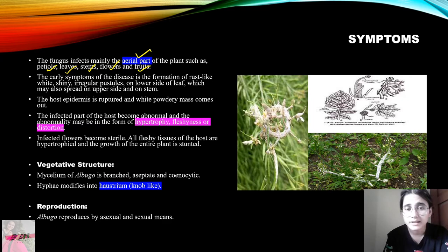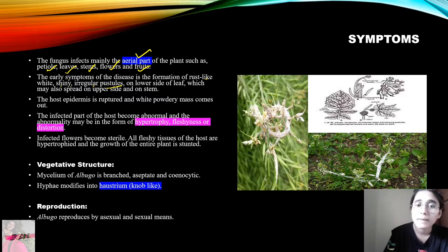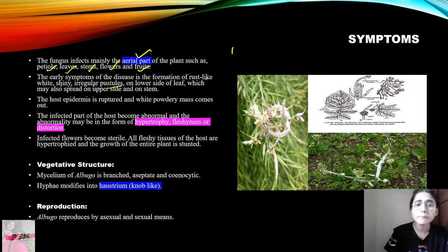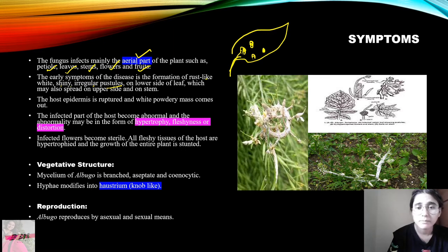The early symptoms of the disease are rust-like, white, shiny, irregular pustules. We see these on the lower surface of the leaf — white pustules which may spread to the upper side and stem as the infection increases. For example, on the lower side of a leaf you will see white pustules, and when the infection increases, it spreads to the upper part and stem. The host epidermis is ruptured and a white powdery mass comes out.